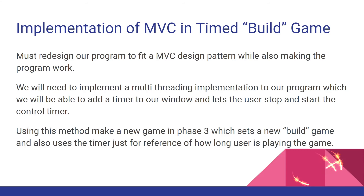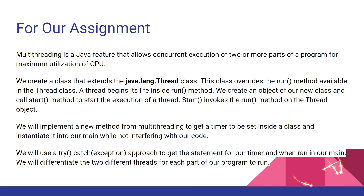To conclude this assignment using this new method, we can make a new game in phase 3 which sets a new game and also uses the timer for reference of how long the user is in the game. To complete this assignment, we will need to stack a card from the top deck until the user does not have any more playable cards remaining. If the user does not have any cards remaining, they must push the 'I cannot play' button, and in the end we will gather the results — whoever has the most 'I cannot play' will win.